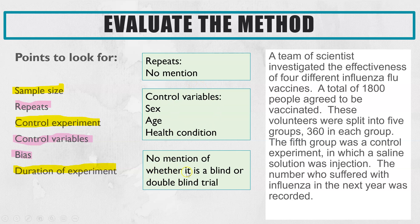There's also no mention of whether the investigation was conducted as a blind or double-blind trial. A blind trial is where the volunteers do not know whether they received the placebo (the saline solution) or one of the active vaccine jabs. A double-blind trial is where neither the volunteers nor the scientists know who received which, and therefore it avoids bias. These are general points to look out for when asked to evaluate a method.